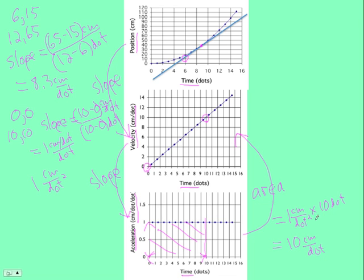And then the change in velocity then is 10 centimeter per dot. Again the units are a clue. Area is a multiplication process. I multiply the units of the y-axis times the units of the x-axis, and I get the units of velocity, centimeter per dot. And so at t equals 10, we were at 10 centimeters per dot. So that works.